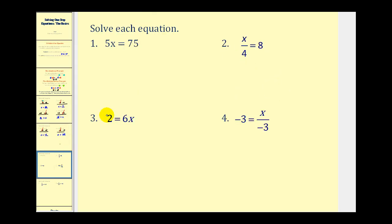Now let's take a look at equations where we use the multiplication principle. Here we have five x equals seventy-five. Five x means five times x, so to undo this multiplication we divide by five. Five divided by five gives us one, and one times x is just x. We do the same on the right side and divide seventy-five by five, which gives us fifteen.